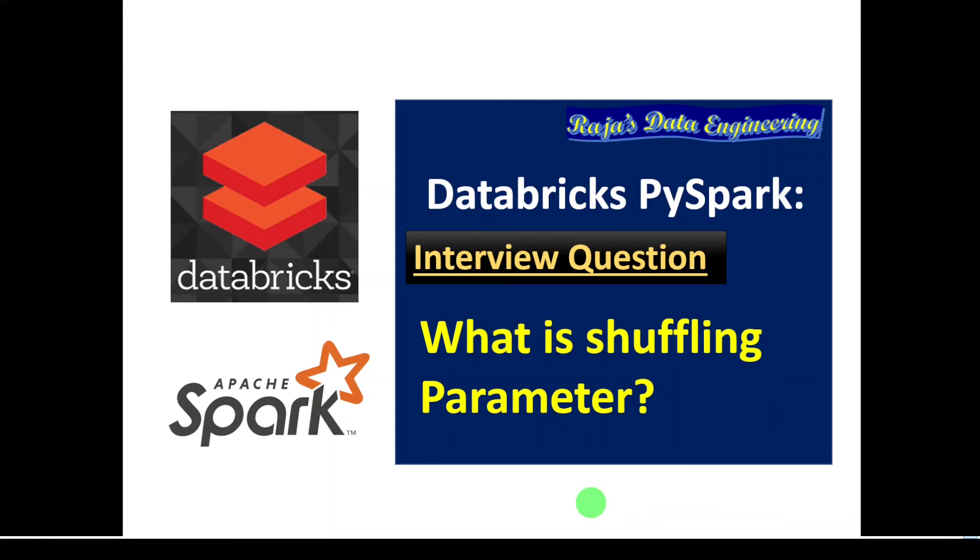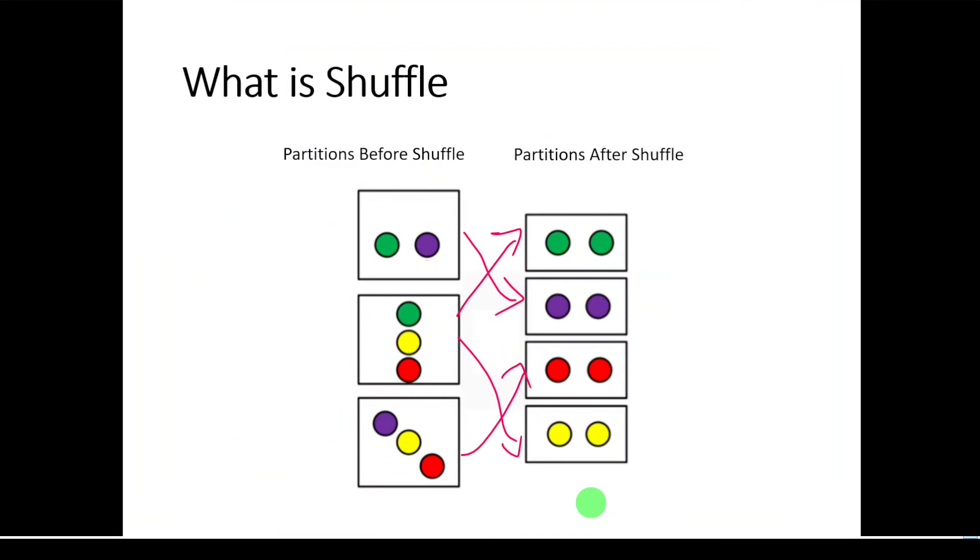In order to understand shuffling parameter, first of all, we need to understand what is shuffle. Shuffle is nothing but exchanging data across executors. And why should we shuffle the data? In order to achieve certain results in certain calculations, it's important to shuffle the data across executors. Shuffle is mainly used in Spark transformations.